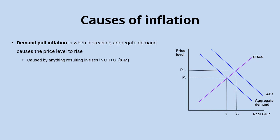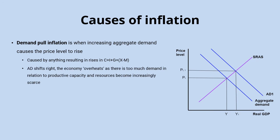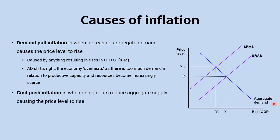For example, rising incomes causing an increase in consumer expenditure, an exchange rate depreciation meaning more demand for exports, or an upcoming general election persuading the government to increase their expenditure. All of these things can cause aggregate demand to rise, shifting the curve to the right — moving from AD to AD1 in our diagram. The economy starts to overheat with demand outstripping supply, putting upward pressure on the price level, and we move from PL to PL1. The result is inflation.